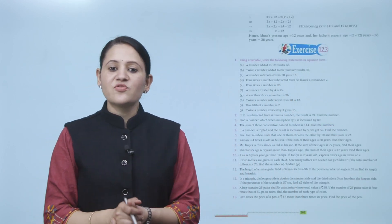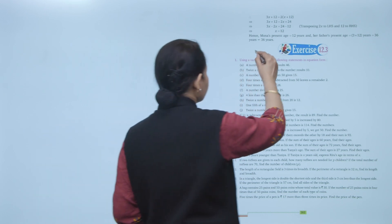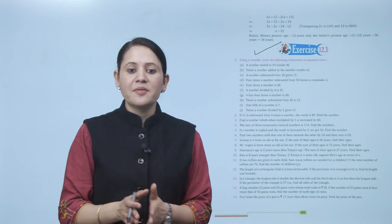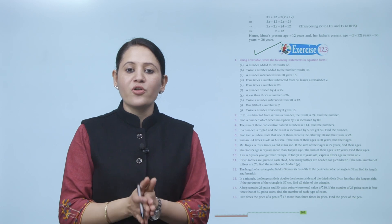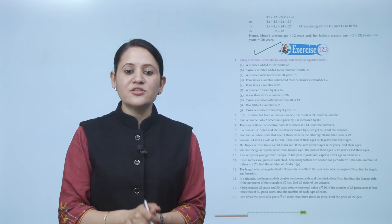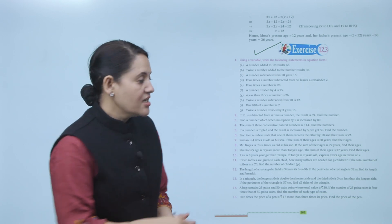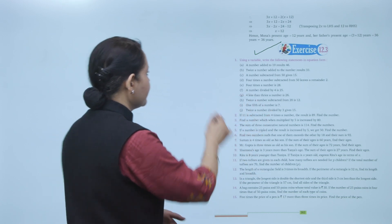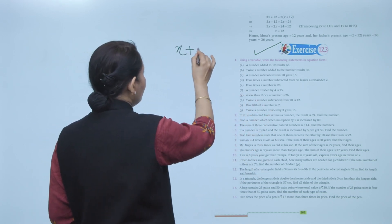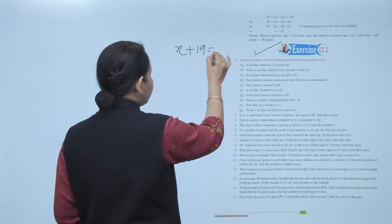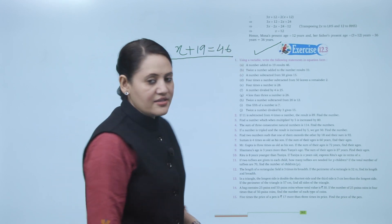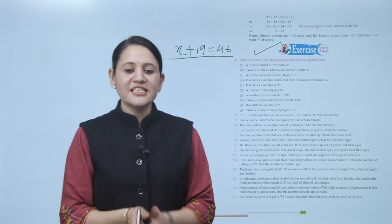Exercise 12.3: using a variable, write the following sentence in equation form. First: a number added to 19 gives 46. Let the number be X. Then X plus 19 equals 46. That is our equation. Practice all the questions of this exercise.